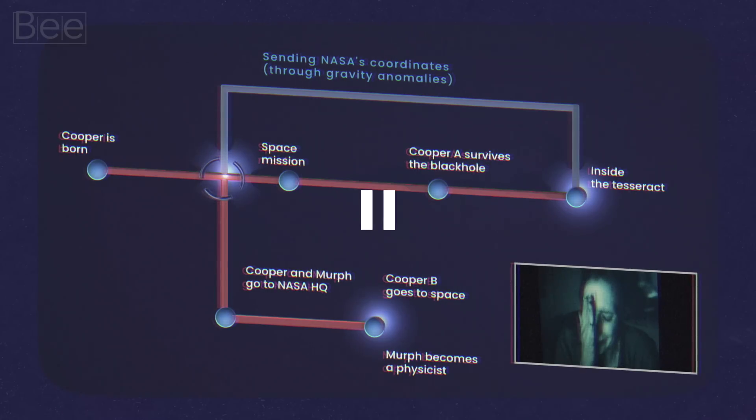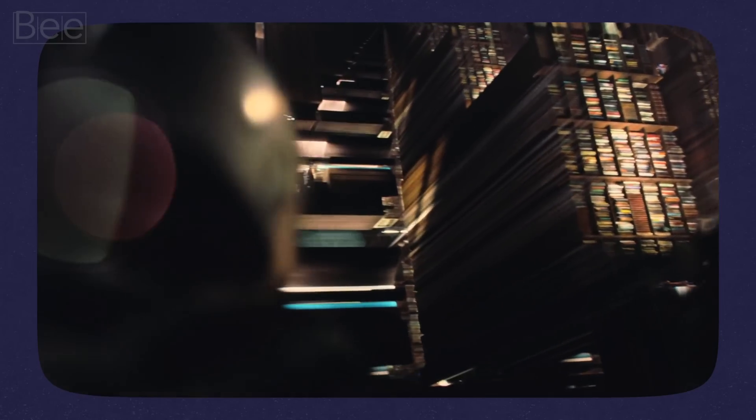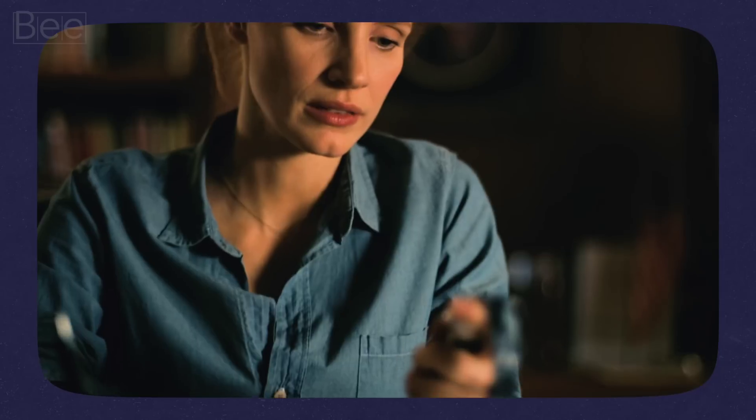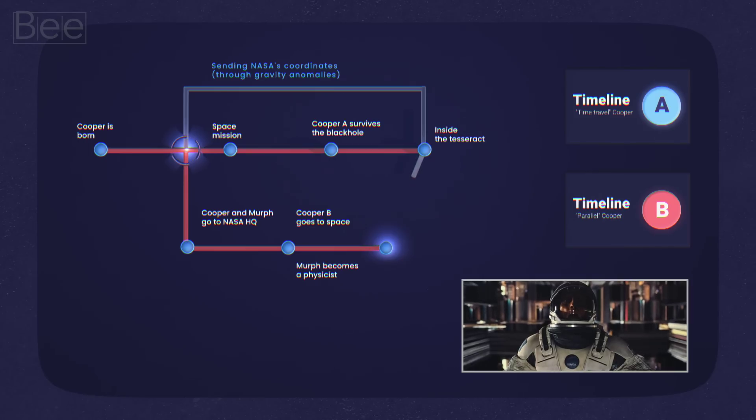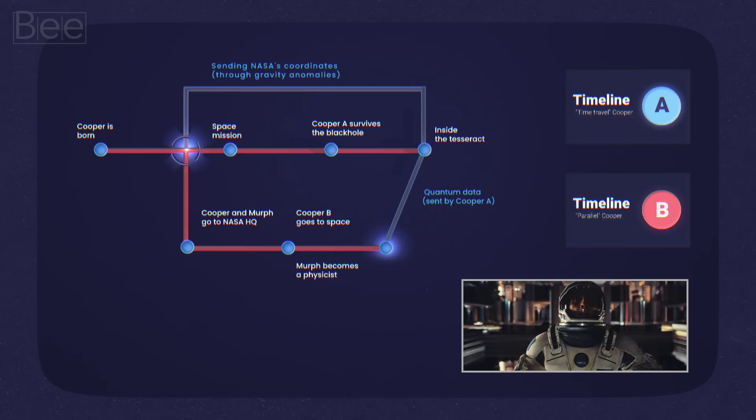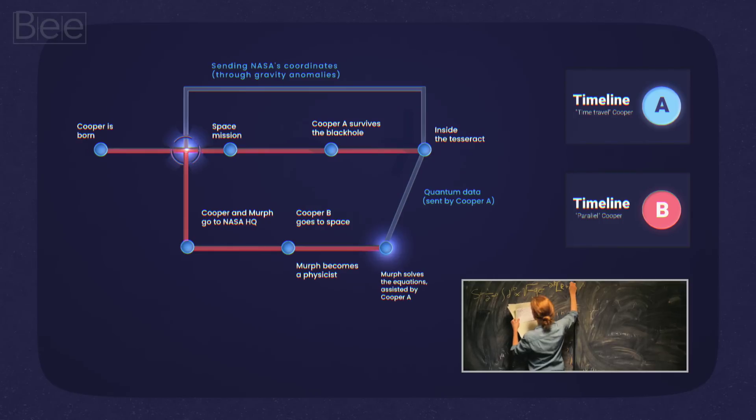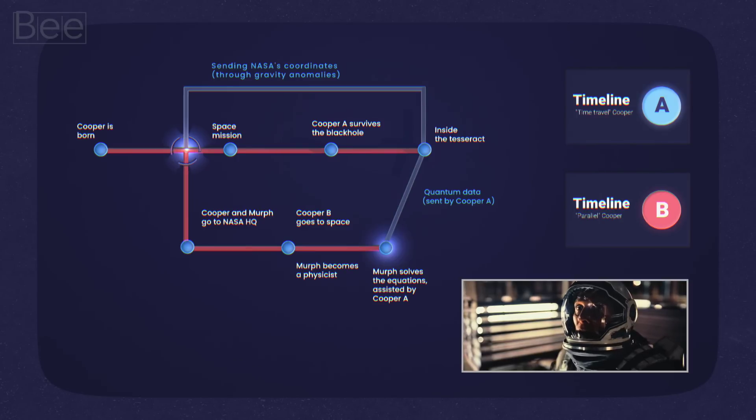But hold on, there's still one more significant event here. Recall that previously inside the tesseract, not only that Cooper sends the coordinate, he also sends the quantum data to adult Murph. As some of you may have guessed, that's actually Cooper from the origin timeline, or timeline A. This would then allow Murphy to solve the gravity equation thanks to Cooper A assistance.